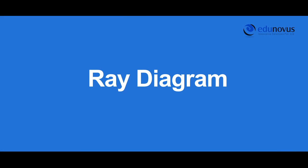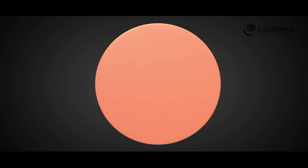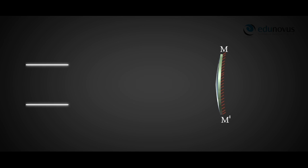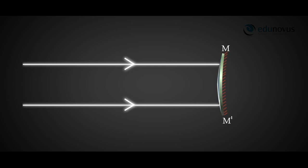Before going to the experiment, let's get familiar with the terminology of the convex mirror using a ray diagram. Consider a convex mirror — this is the reflecting surface, and the non-reflecting surface is on the other side. The curved line mm', the diameter of the circular rim of the mirror, is called the aperture. It is the part of the mirror through which light rays enter. The center of the spherical surface of the mirror is called the pole, denoted by P.